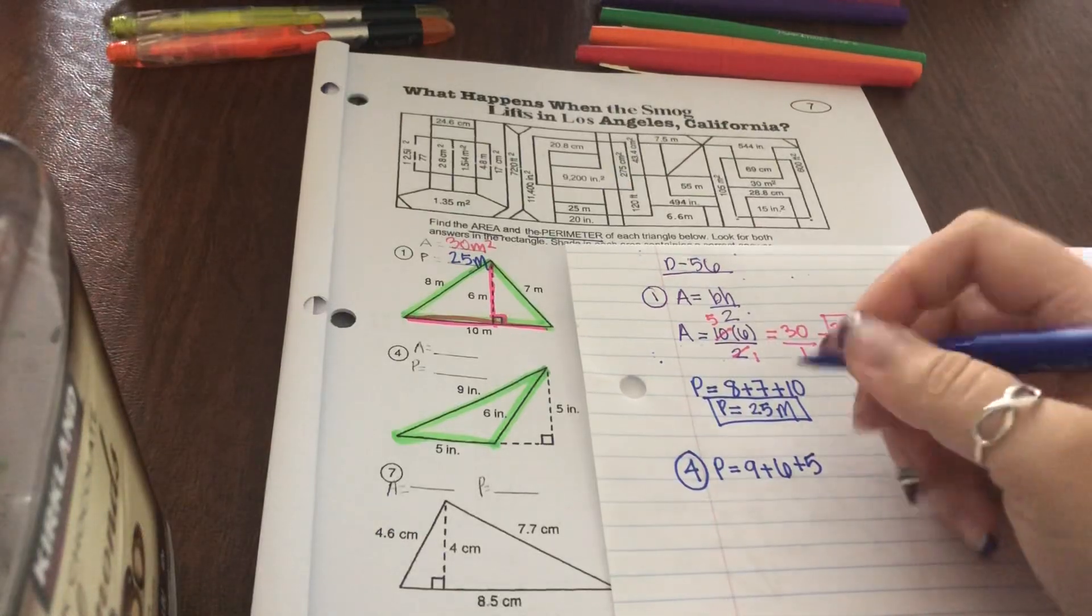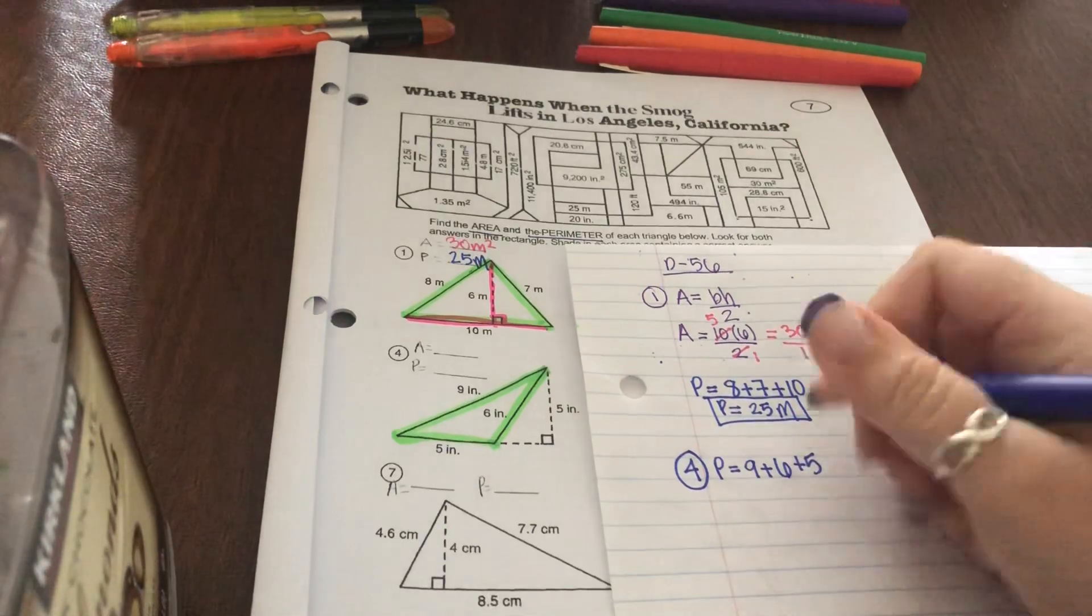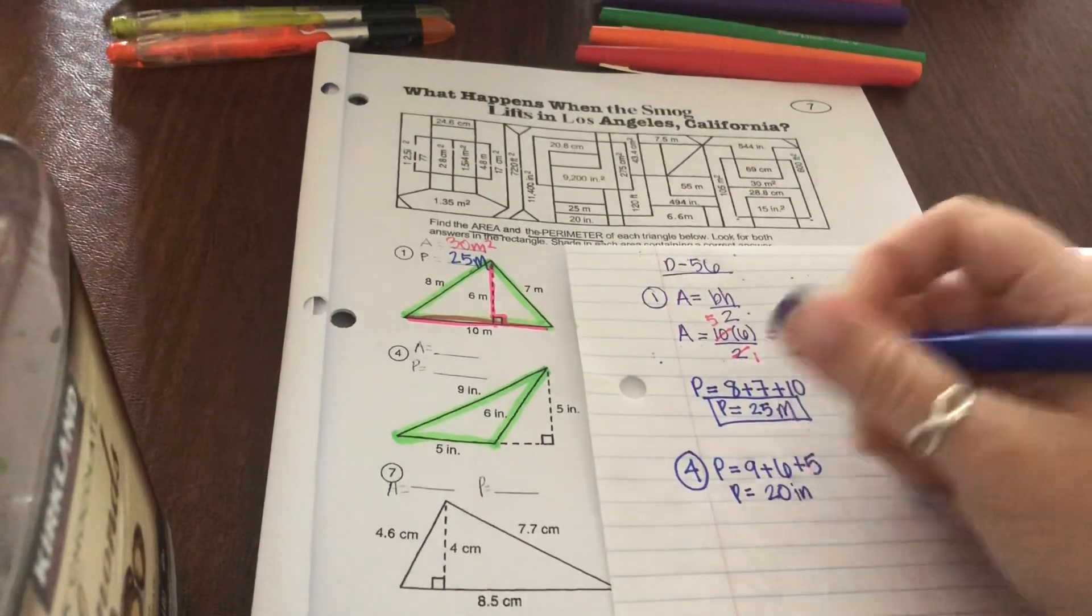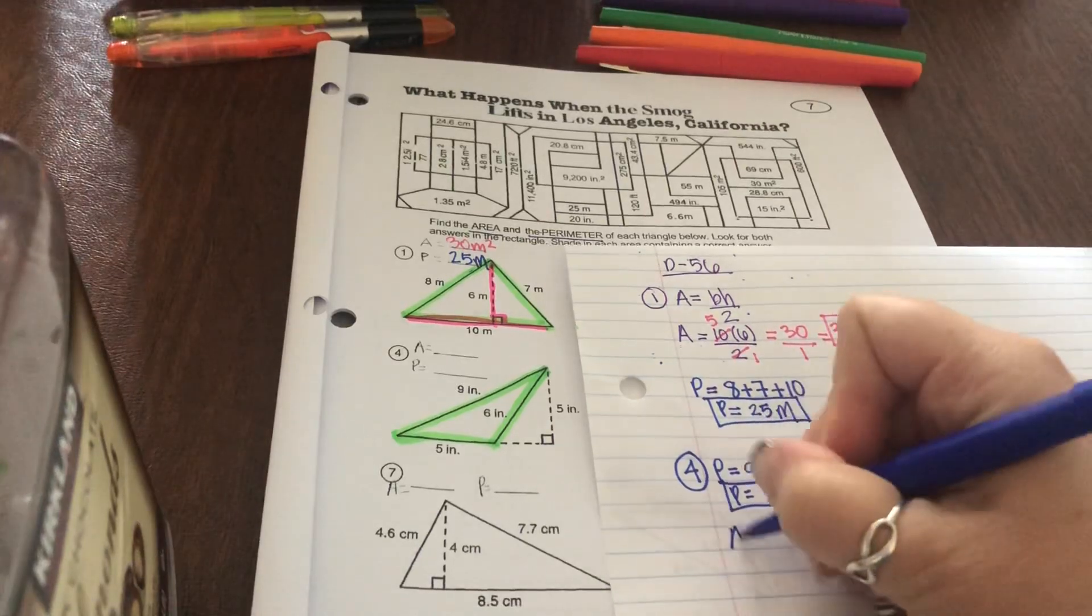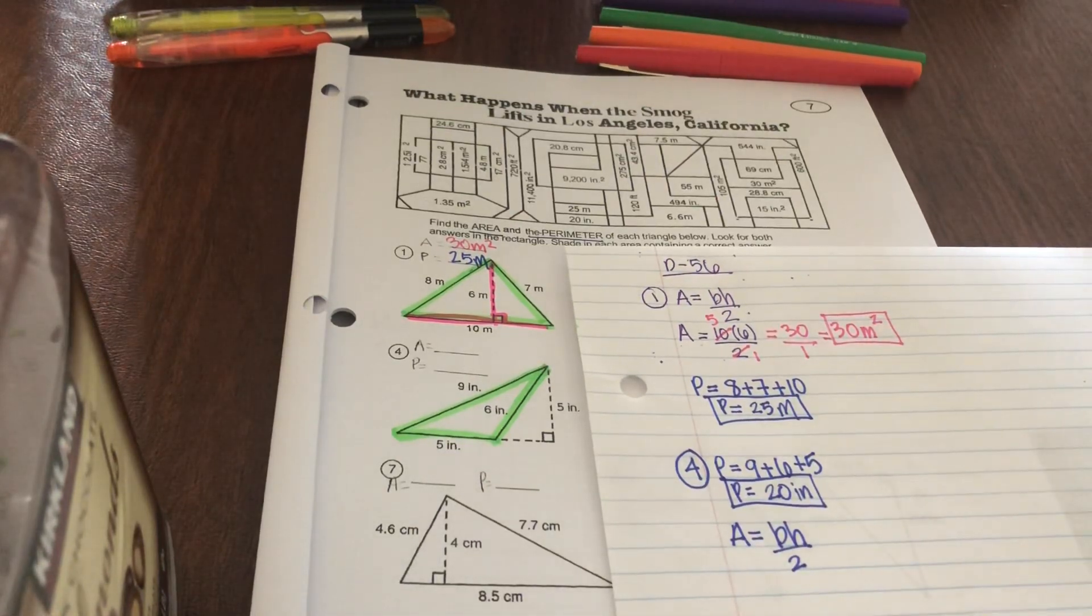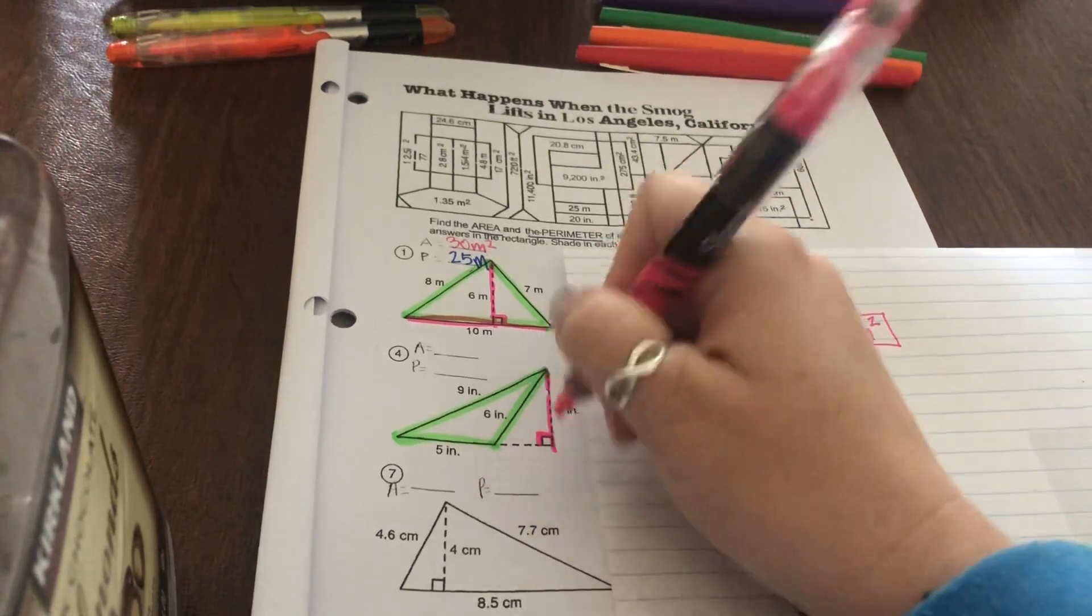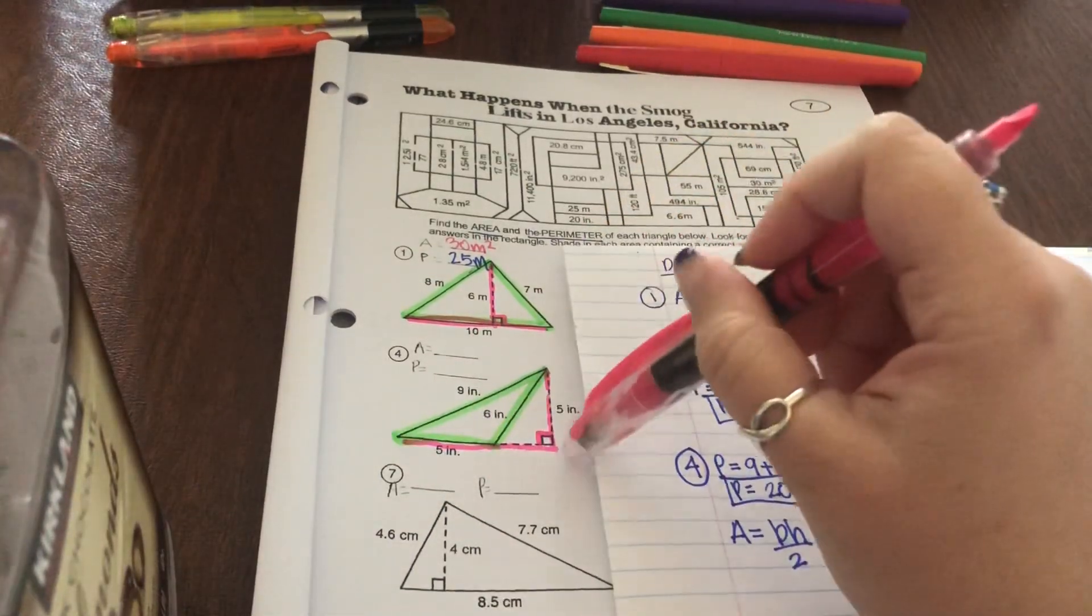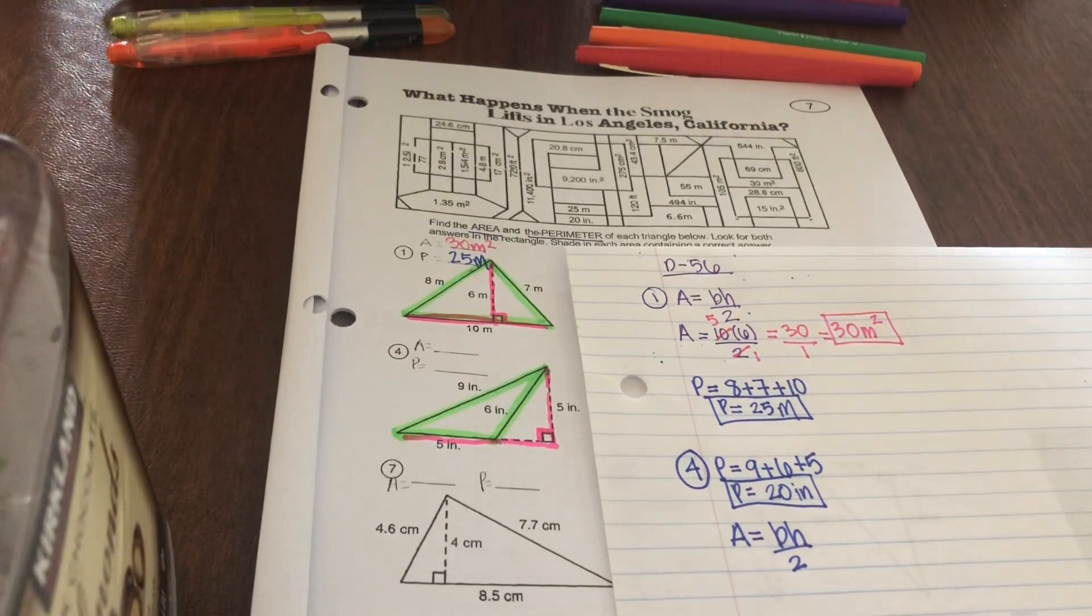So if we add those together you have 9 plus 6 is 15, 15 plus 5 is 20. And for number 4 my unit was inches so it's 20 inches. For the area of number 4 it's base times height divided by 2. Look for that little box to connect your base and your height. So that connects this 5 to this line which is part of the 5. So you're going to plug in the base of 5, the height of 5, and divide it by 2. And what should your unit be? Inches squared.